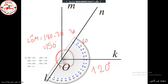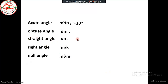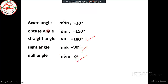To summarize: a null angle measures 0°, a right angle measures 90°, a straight angle measures 180°, an obtuse angle measures between 90° and 180°, and an acute angle measures between 0° and 90°. If you add all the angles around point O you should get 360 degrees.